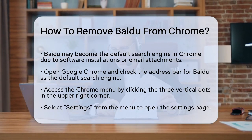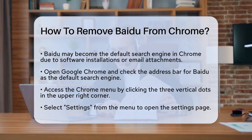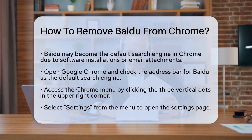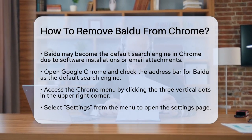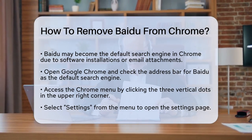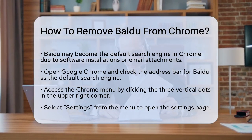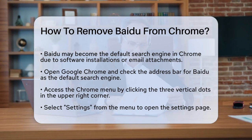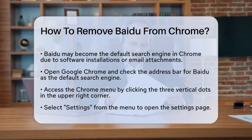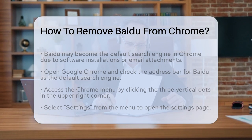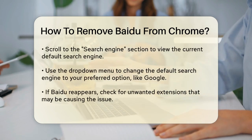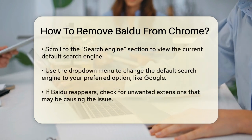To start, open your Google Chrome browser. Look at the address bar where you type in URLs and search queries. If Baidu is set as your default search engine, you'll see it there. Here's how you can change it back to your preferred search engine, like Google.